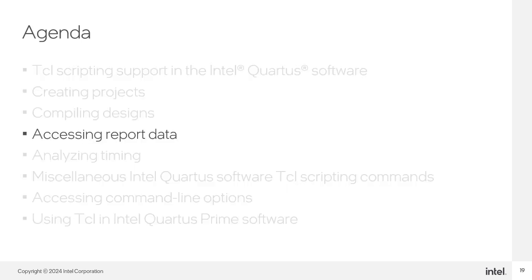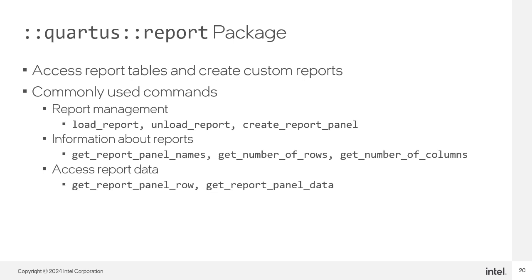After compiling the design, you'll want to get information from the compilation report. The report package includes commands to access the Intel Quartus Prime report tables and data in those report tables, and create custom reports. The report package is not loaded by default in most Intel Quartus Prime software executables, so don't forget to use the load_package report command. Some commonly used commands for report management are load_report, unload_report, and create_report_panel.